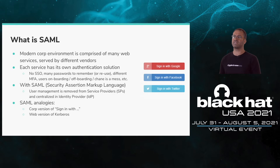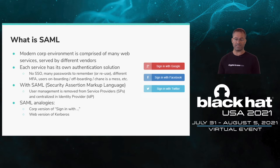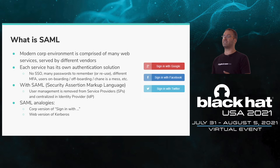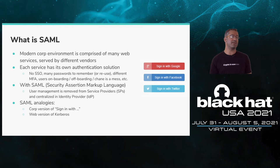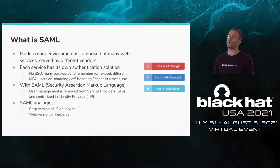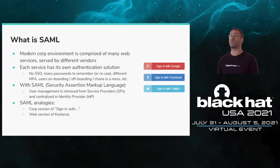So let's talk about Golden SAML. Before we do, we have to understand how SAML works. Modern corporate environments are comprised of many web services served by different vendors — for example, GitHub to manage code, Jira to manage projects, G Suite for email, and so on. Each service has its own authentication solution, which creates a huge headache for IT and security departments. If you have 20 different services, IT has to create 20 different accounts per user, manage passwords for each — unique passwords or reused passwords, both with their own limitations — and handle role changes or terminations across all of them.